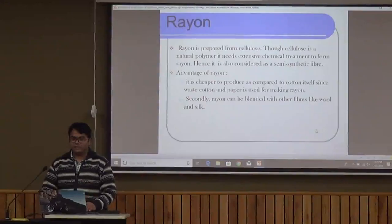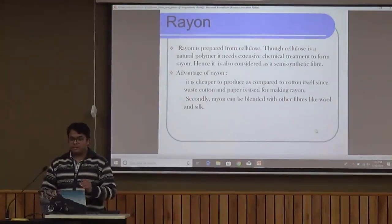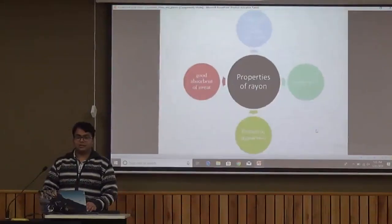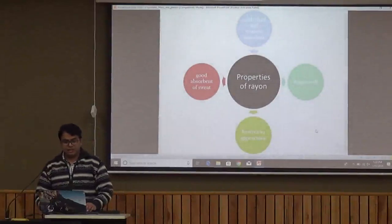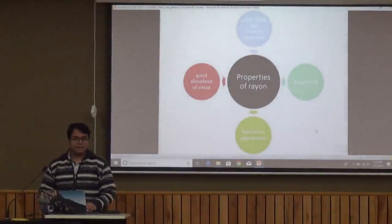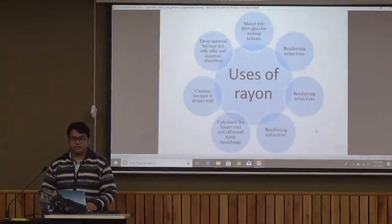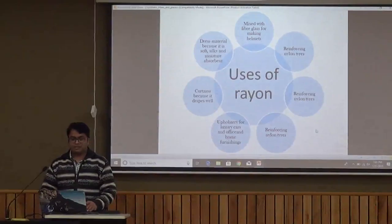Rayon has various advantages. It is very cheap compared to cotton. It is easily blended with other fibers like wool and silk. As it appears silk-like in texture, it is commonly called synthetic silk or artificial silk. Its properties are: it is luxurious like silk, drapes well, is easily dyed into many colors, easy to weave, and is a very good absorbent of sweat. It is used in dress material, fiberglass, reinforcing tires, nylon tires, upholstery for luxury cars, curtains, etc.